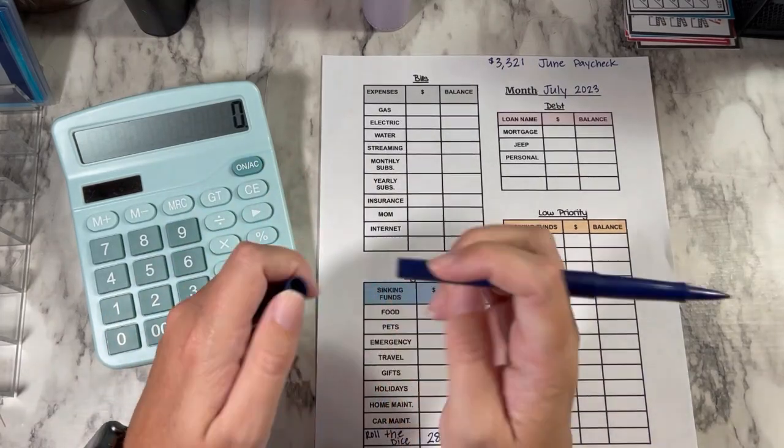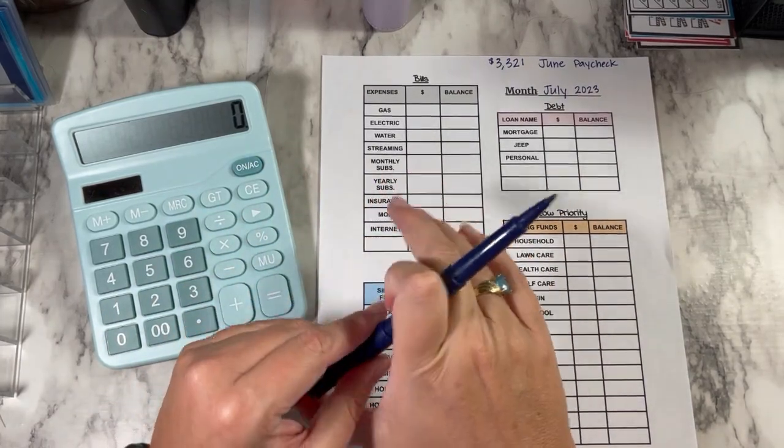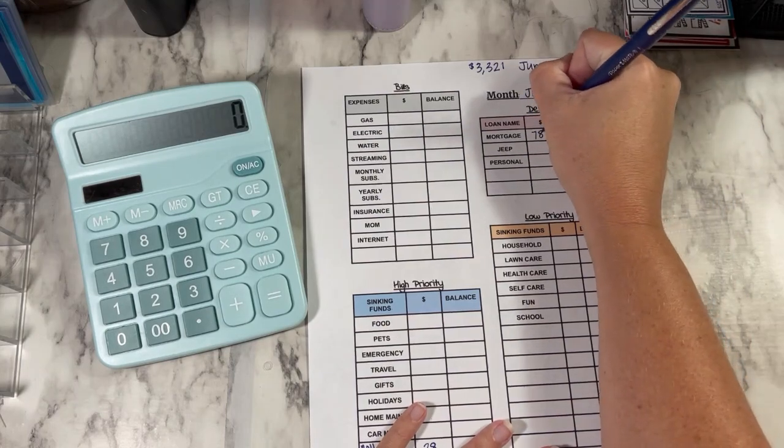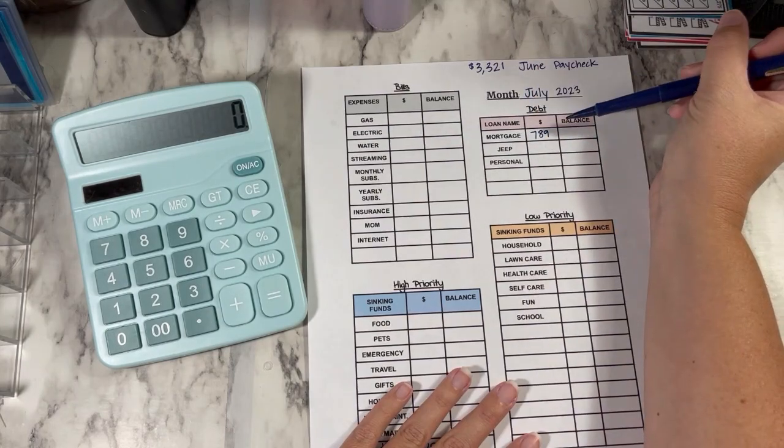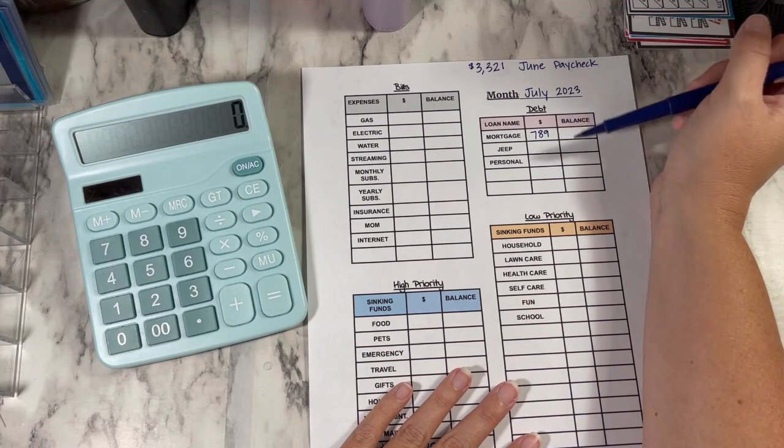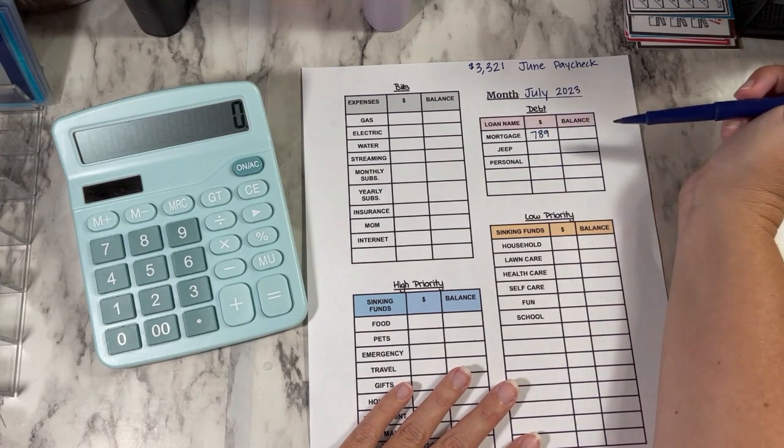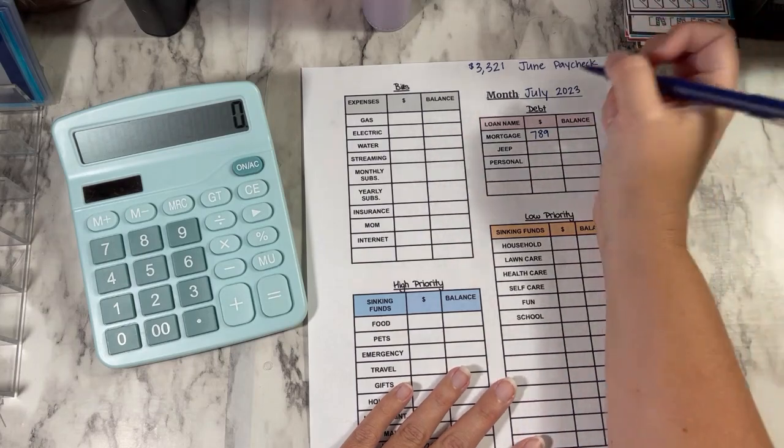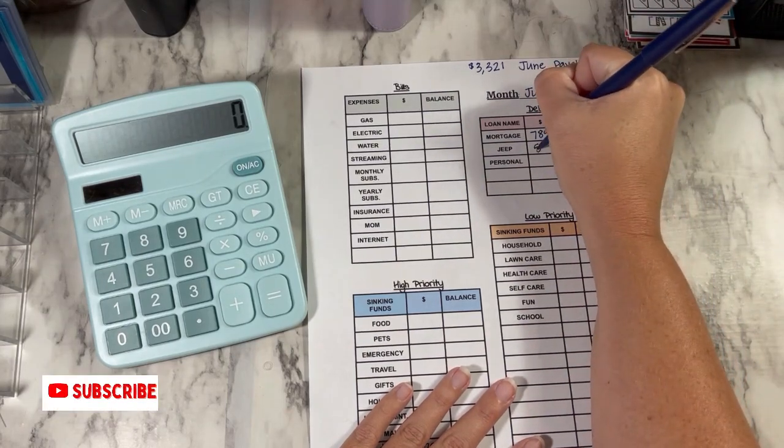So I always start with my debt that I have. My mortgage is $789. It's just myself, so my house is not anything fancy. And then my Jeep payment is $540.